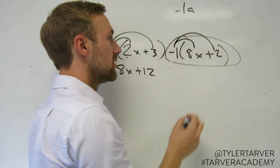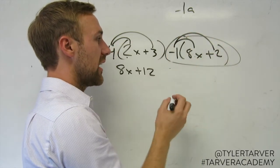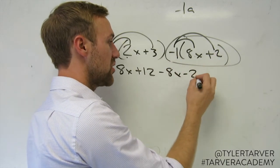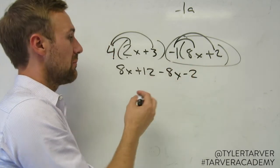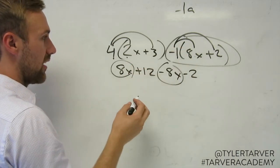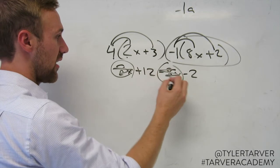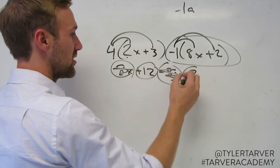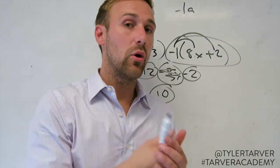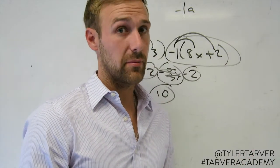So what you do is distribute that negative 1 to every term inside here. Negative 1 times 8x is negative 8x. Negative 1 times positive 2 is negative 2. And then you would combine your like terms. You've got 8x minus 8x - well, that happened to work out nicely, those cancel each other out. And then 12 minus 2 is 10. You got your answer. And now you know the number one way people mess up with the distributive property. And that's the more you know.